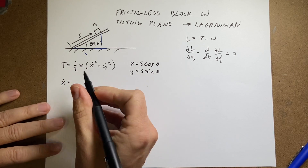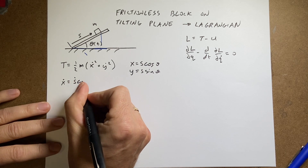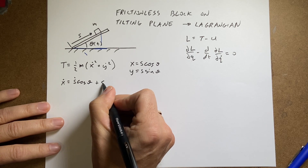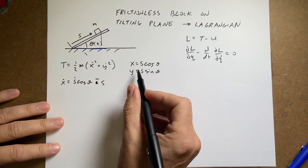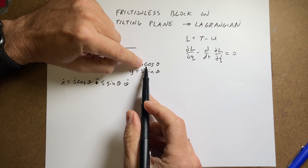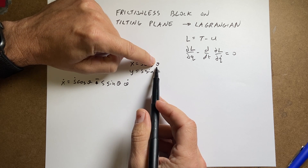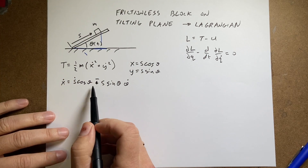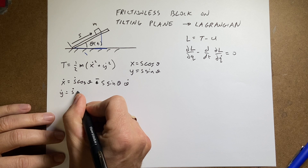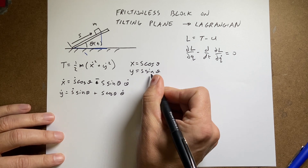Now I can take the time derivative of x. Since both s and theta can change, by the product rule: ẋ = ṡ·cos(θ) − s·sin(θ)·θ̇, because the derivative of cos(θ) with respect to time is −sin(θ)·θ̇. Similarly for y: ẏ = ṡ·sin(θ) + s·cos(θ)·θ̇, taking the derivative of sin(θ) which gives cos(θ)·θ̇.